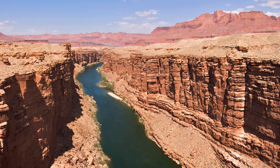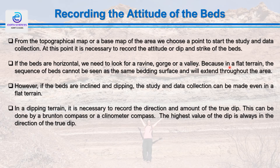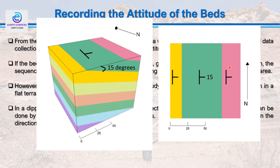However, if the beds are inclined or dipping, data collection can be made even on a flat terrain. For example, these beds are inclined and the terrain is flat. So if we are walking over there, we can have information of a number of beds even on the flat terrain.